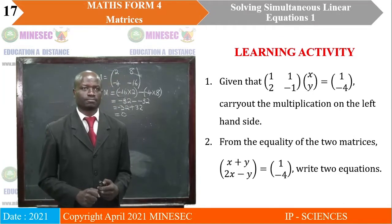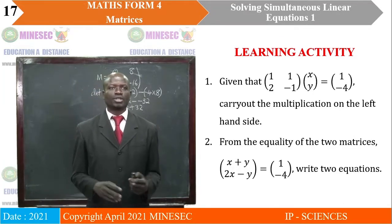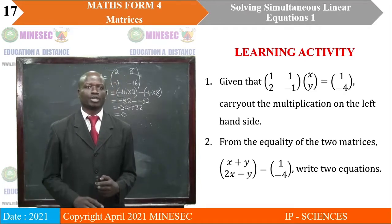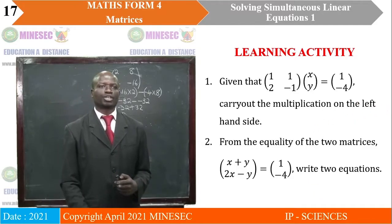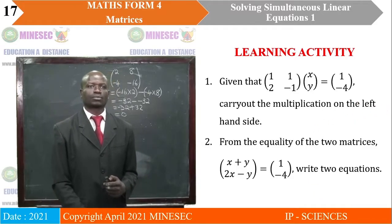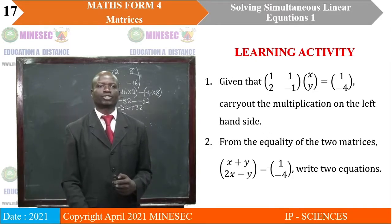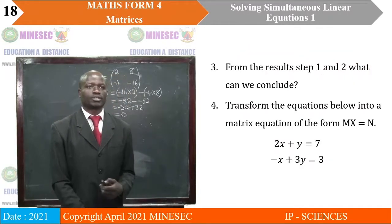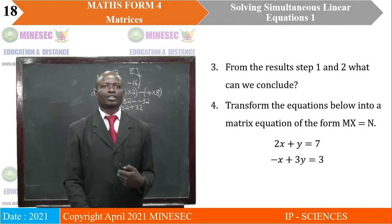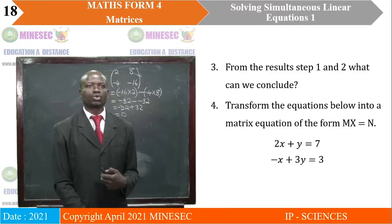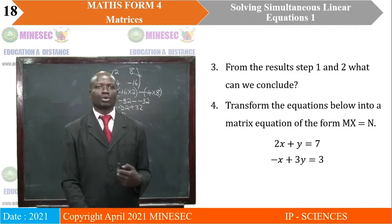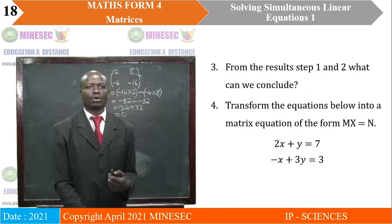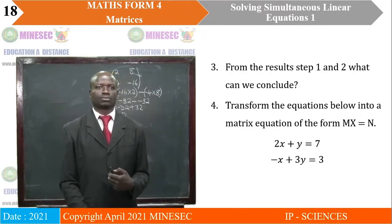Let's get into the learning activity. Given that the product of these two matrices gives us the matrix [1; -4], carry out the multiplication on the left-hand side. From the equality of the two matrices, write two equations. From the results in steps 1 and 2, what can we conclude? Transform the equations below into a matrix equation of the form MX = N.